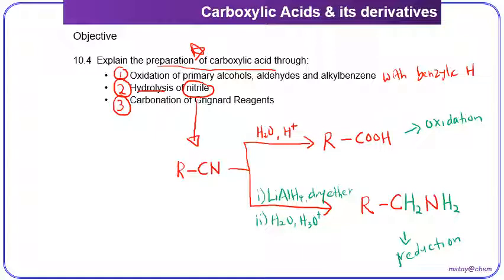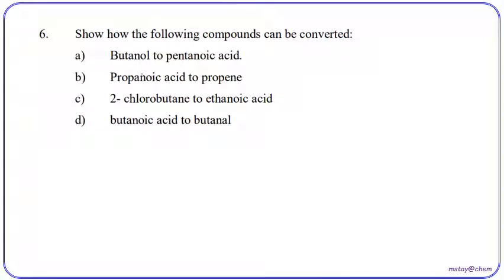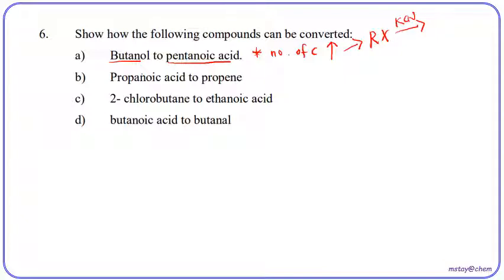Please take note and we will continue with tutorial question soon. Tutorial question number six: we are going to convert butanol to pentanoic acid. We notice that the number of carbons increased. So if the number of carbons increases, we can relate this to haloalkanes. Haloalkane can react with KCN to form nitrile, and nitrile can undergo hydrolysis to form carboxylic acid. Haloalkane can also form Grignard reagent, and the Grignard reagent can react with carbon dioxide followed by hydrolysis to form carboxylic acid.